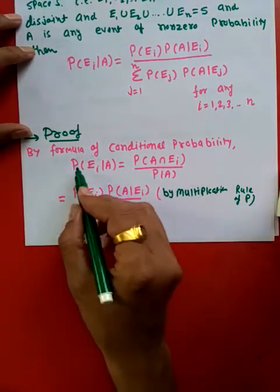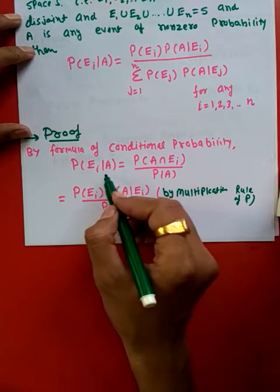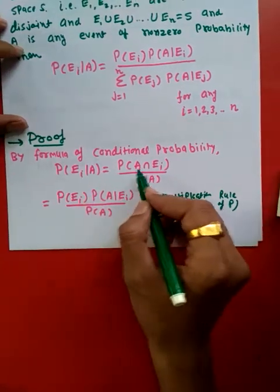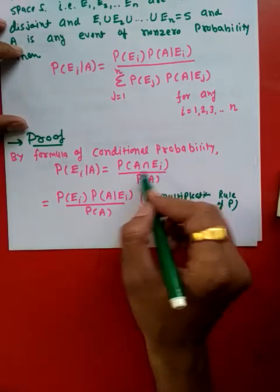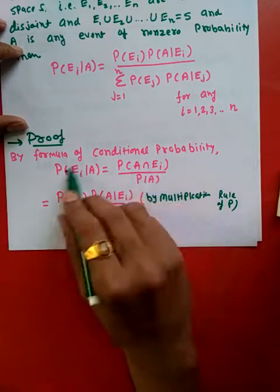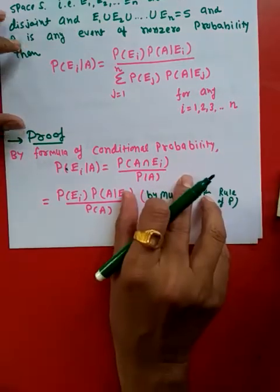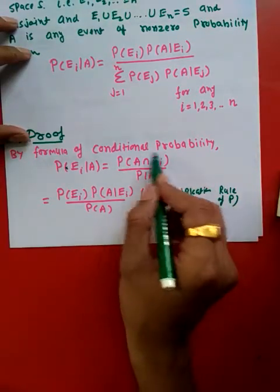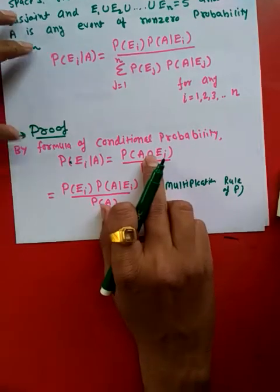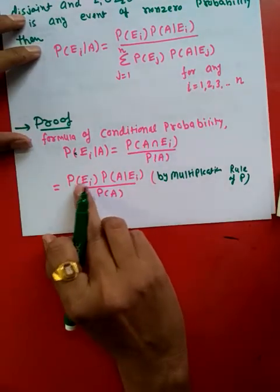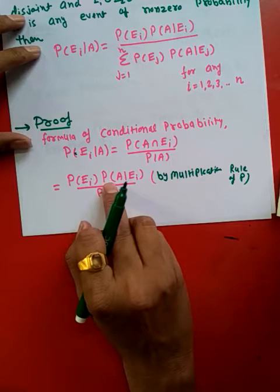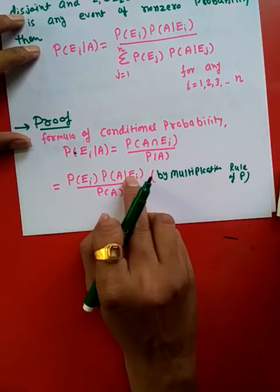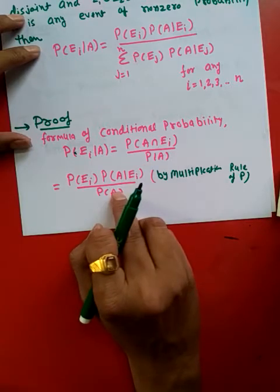So what we know about conditional probability: P(Ei | A) can be given as P(A ∩ Ei) divided by P(A). Now if I apply the multiplication rule of probability, the numerator becomes P(Ei) multiplied with P(A | Ei).